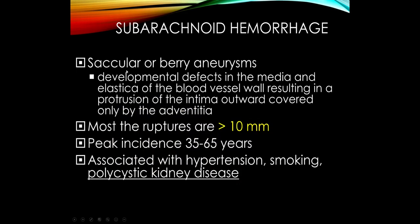Subarachnoid hemorrhage is due to saccular or berry aneurysms — don't confuse these with Charcot-Bouchard aneurysms. Charcot-Bouchard aneurysms bleed into the brain parenchyma: putamen, thalamus, pons, cerebellum. When saccular or berry aneurysms rupture, they bleed into the subarachnoid space, not the brain parenchyma. These aneurysms form because of a defect in the media-elastic layers of the blood vessel, with the intima slowly protruding outward. Larger aneurysms, especially above 10 mm, carry a risk of rupture. Peak incidence is between ages 35 and 65; they are more likely in patients with hypertension, who smoke, or who have polycystic kidney disease.